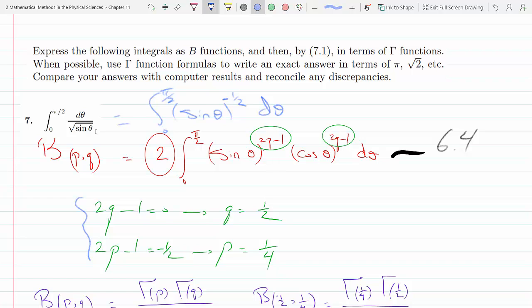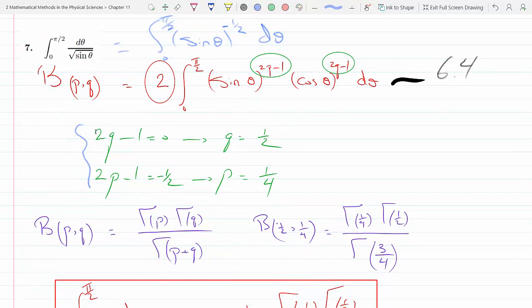From these two equations here, I could solve for q to be a half and p to be 1/4. Now I have my beta function B(p,q), so that would be B(1/2, 1/4).